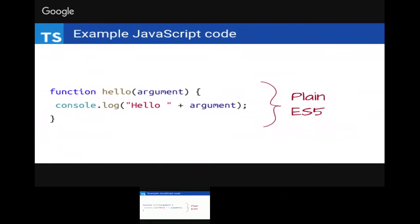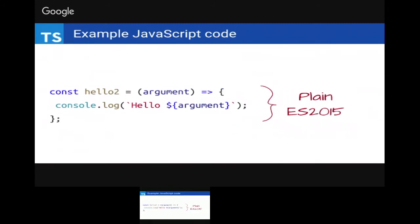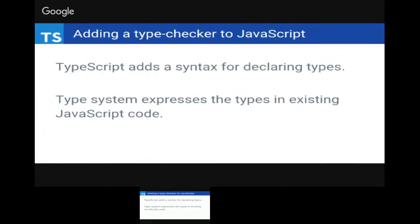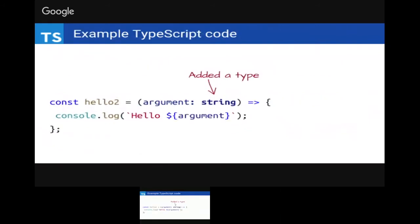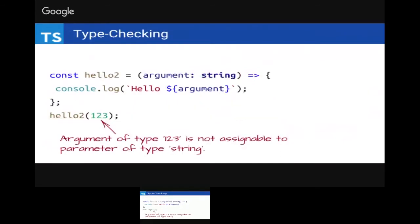For example, ECMAScript 5 is basically today's JavaScript in all browsers. If we add the fat arrow syntax and back-tick string interpolation, that's ES2015. TypeScript adds a colon syntax for types. And of course, we now have a type checker as part of the compiler — you can think of the compiler as two separate things: a type checker and a code emitter.